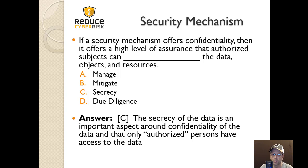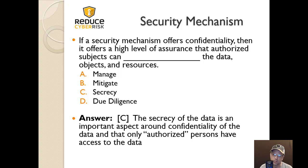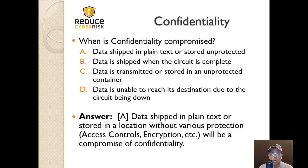Secrecy of the data is an important aspect around confidentiality — that only authorized persons have access to it. To read it out: if a security mechanism offers confidentiality, then it offers high-level assurance that authorized subjects can have secrecy of the data objects and resources. It keeps it quiet, keeps it to itself — it's confidential.